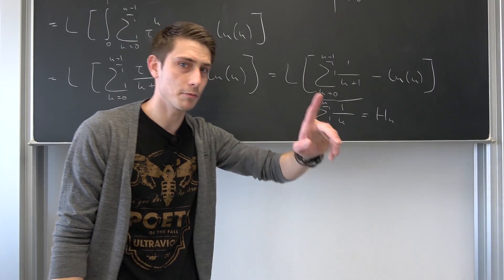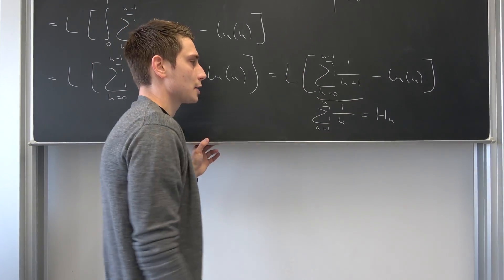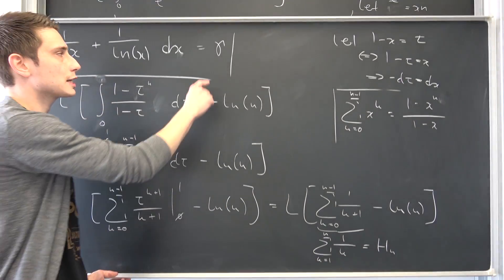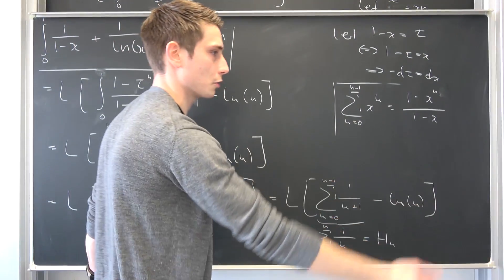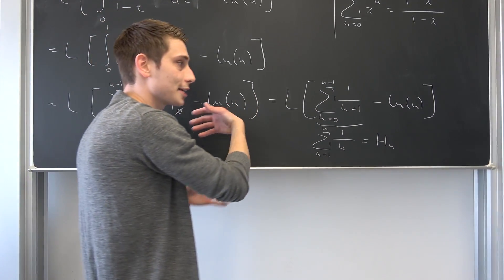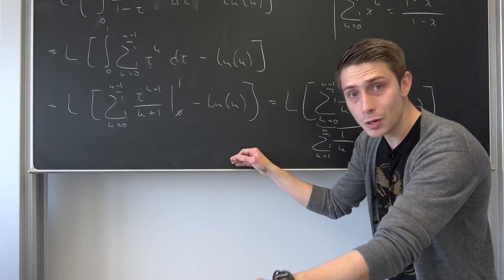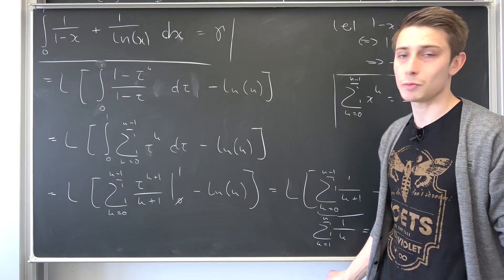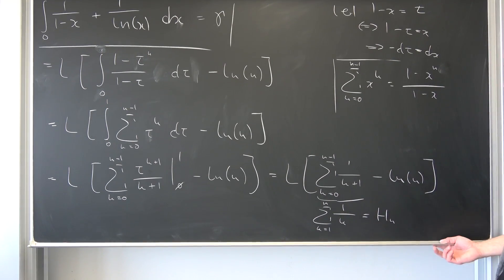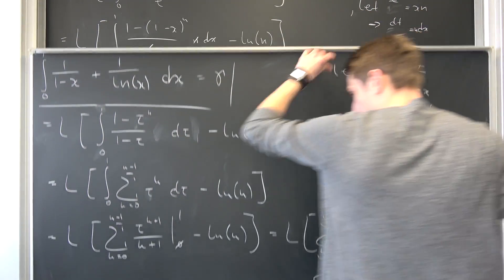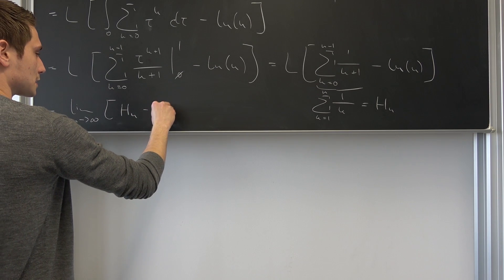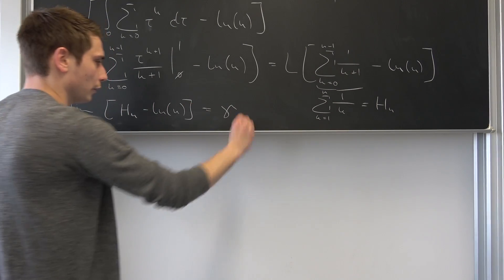And that right here, if n approaches infinity, is diverging. So we have the difference of two diverging series — we let n approach infinity and despite that we are still going to get a finite answer: the Euler-Mascheroni constant. And this right here is it. The limit as n approaches infinity of the harmonic series minus the natural log of n — and this by definition is our Euler-Mascheroni constant.